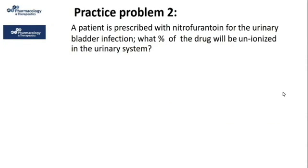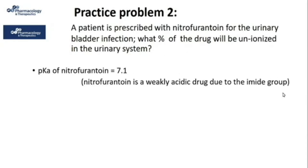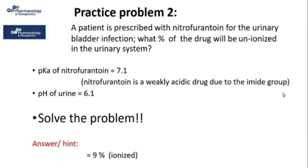Here is another problem: a patient is prescribed nitrofurantoin for a urinary bladder infection. What percent of the drug will be unionized in the urinary system? The pKa of nitrofurantoin is 7.1, and it is a weakly acidic drug due to the presence of an imide group. The pH of the urine is 6.1. Only 9% of the drug is ionized in the urinary bladder, while 91% is unionized — that is, lipid soluble — which is essential to kill susceptible microorganisms in the urinary bladder.